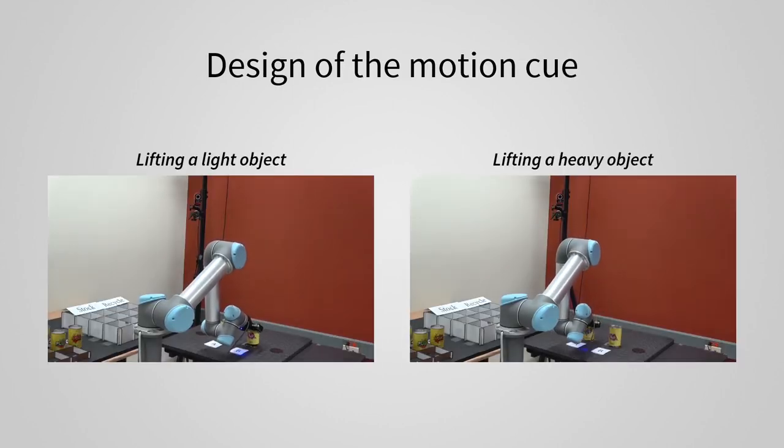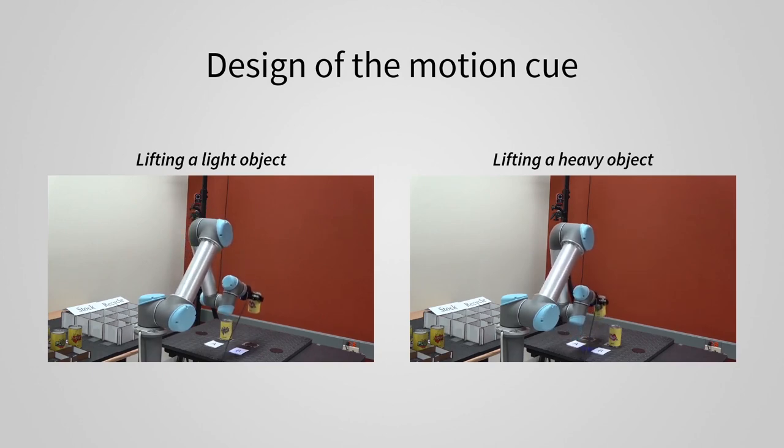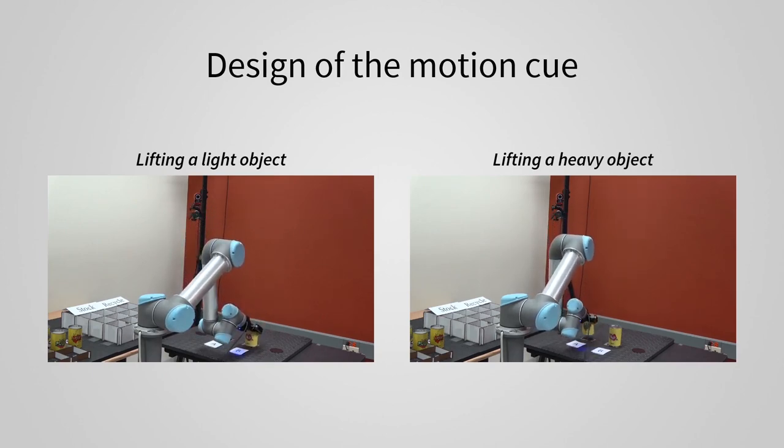Drawing from prior work, we design our motion cue such that the robot lifts a heavy object slowly. We manipulate the motion of the robot only in the direction of weight, which is a vertical direction.